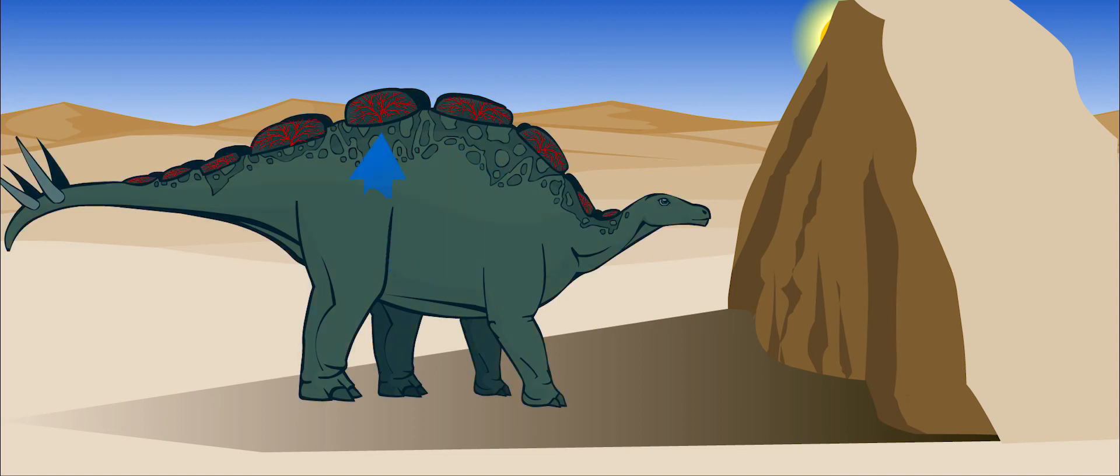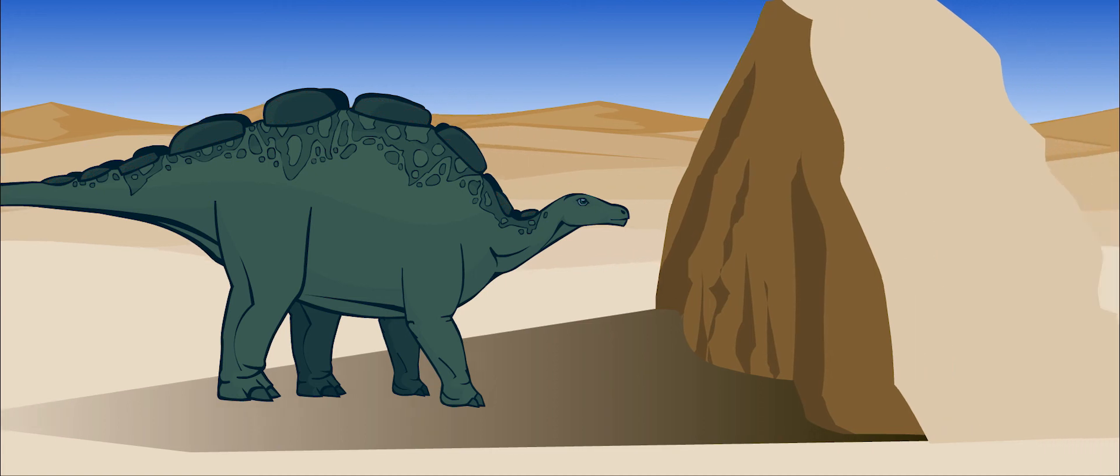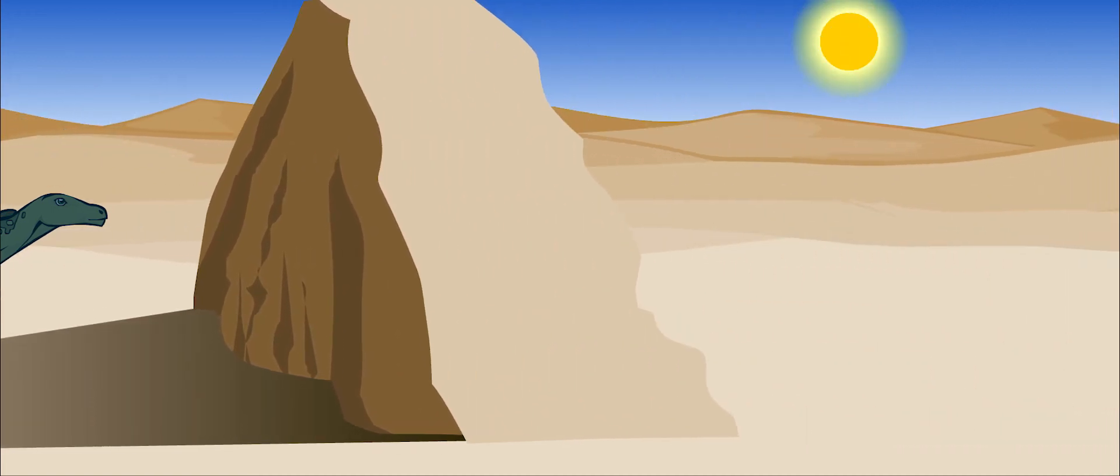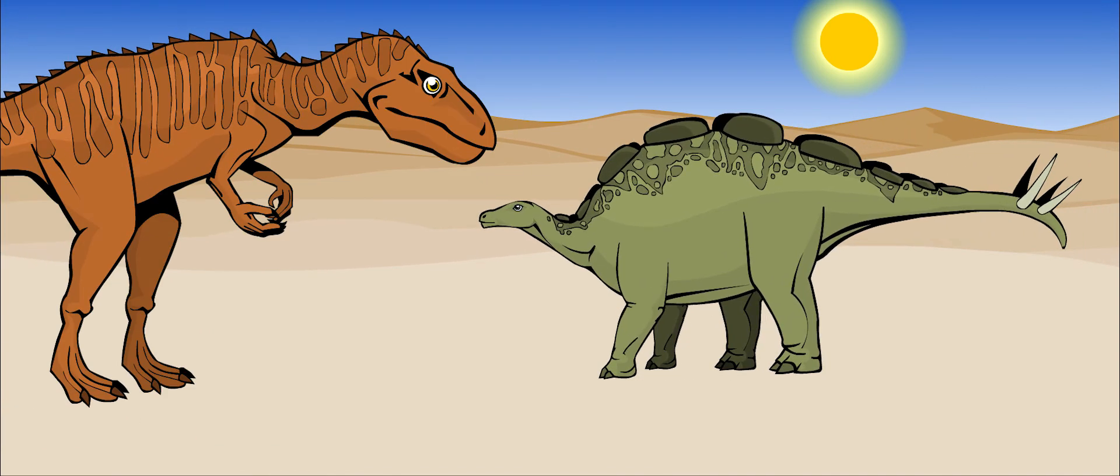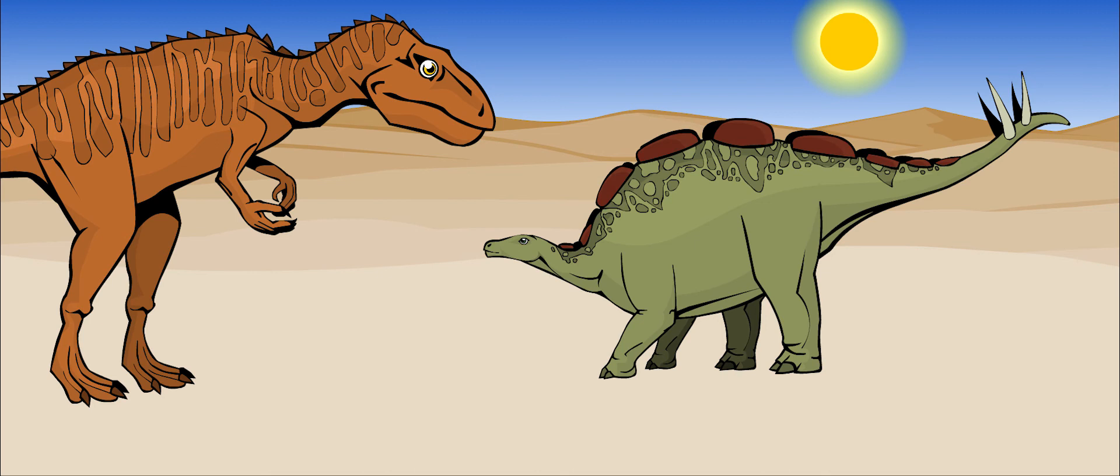Some paleontologists believe that if the plates had blood vessels going through them, they could probably change color, too. This would have looked very interesting to a mate or very scary to a predator.